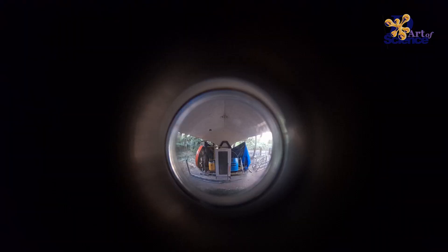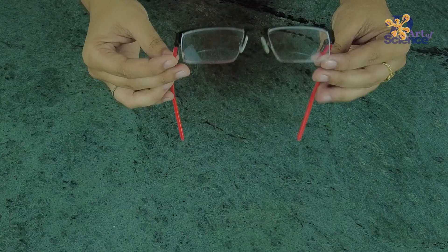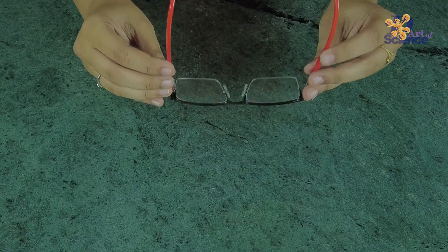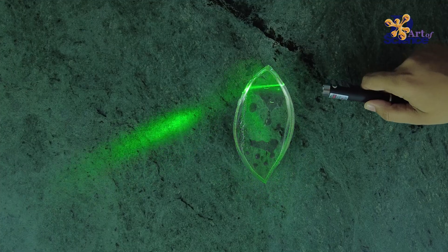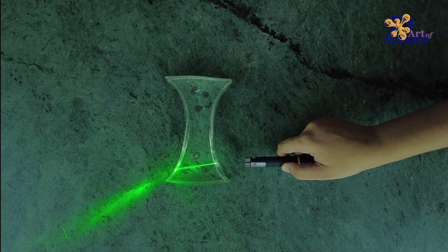They are commonly used in peepholes of your doors, torch lights to help diverge the light, and also in eyeglasses. If you make this DIY and have any doubts, let us know in the comments below and we'll see you next week.